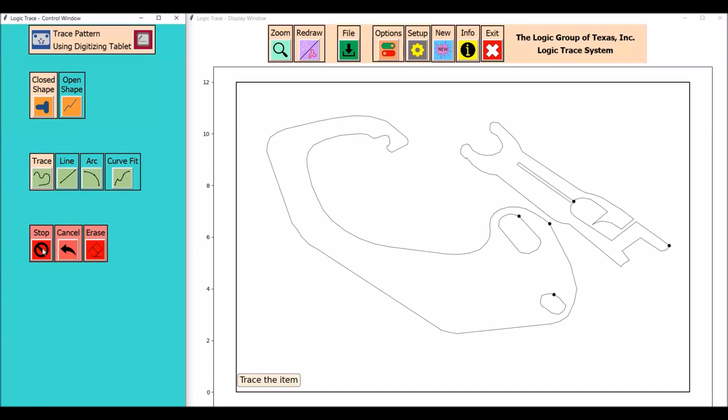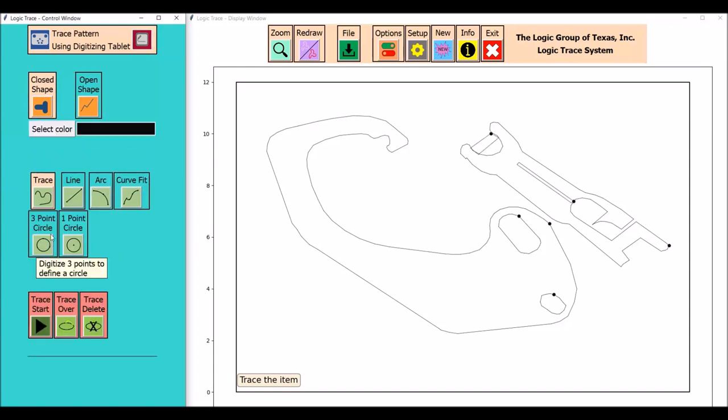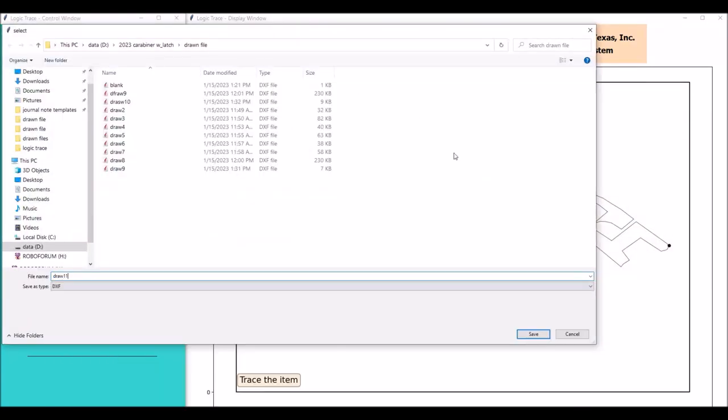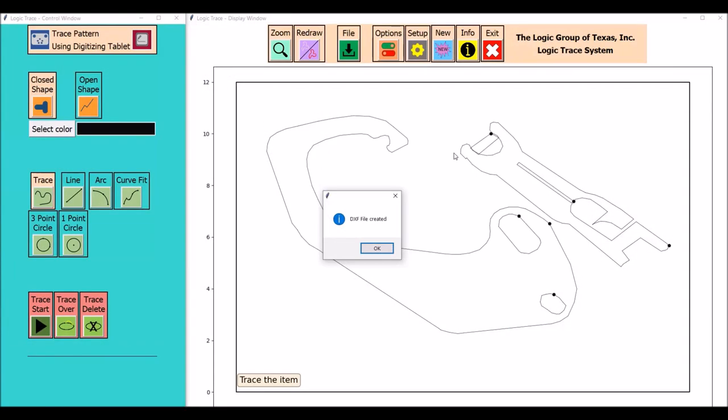I'm getting close to finishing up so I'll save that last tracing as my final trace. I'm going to load that file into Vectric Aspire 11.5 and check the vector quality.